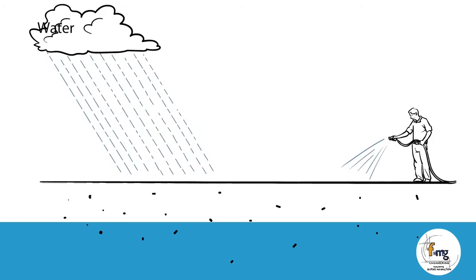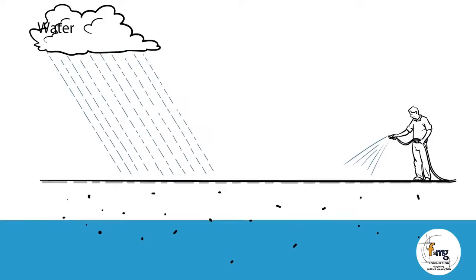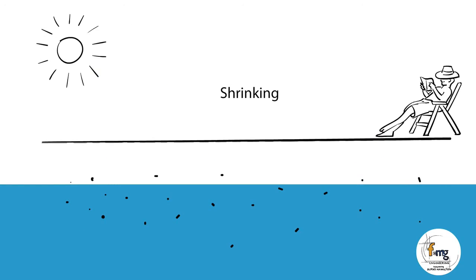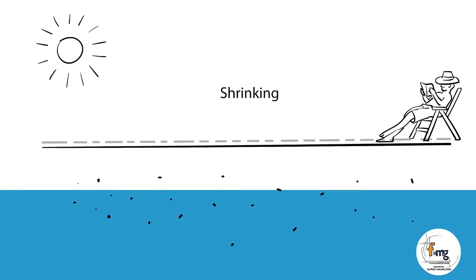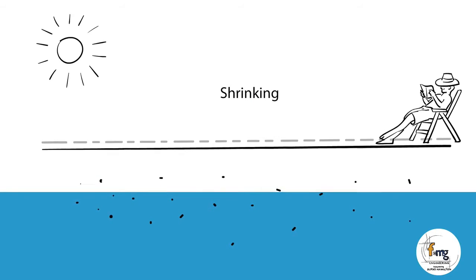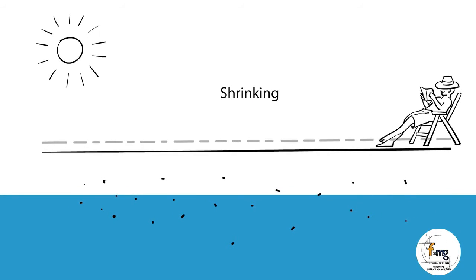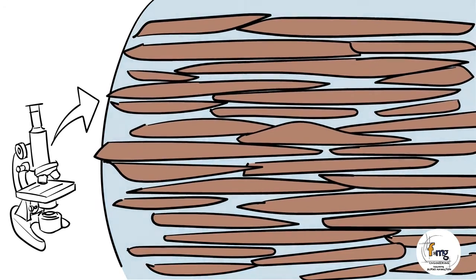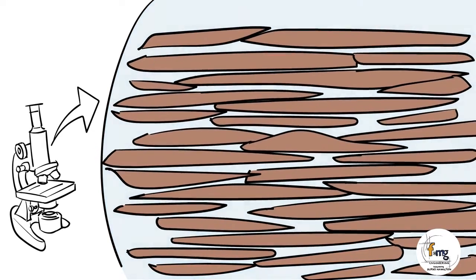The most common ways clays can absorb water and swell are from naturally occurring rainfall or from the homeowner watering their garden or lawn. Likewise, clays will shrink when the water content is removed and the clay dries, such as during long dry hot spells in summer months or during periods of drought. As the water evaporates out of the clay, the plates all move back together again.